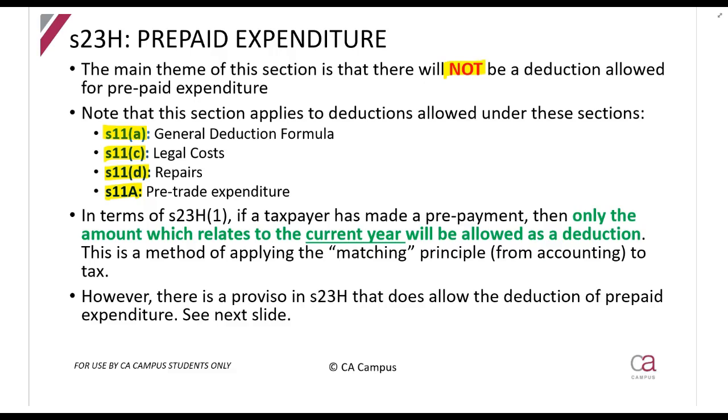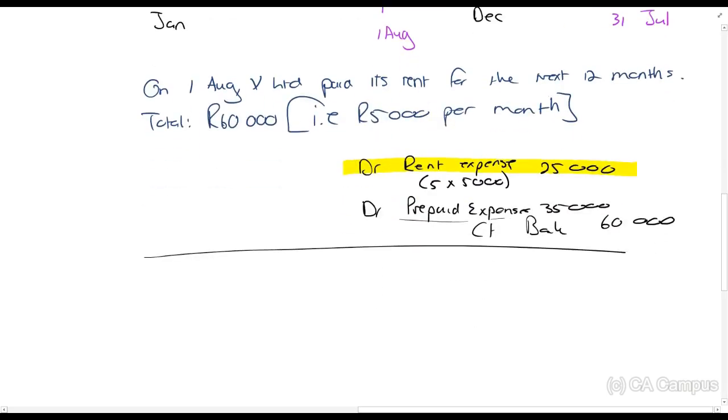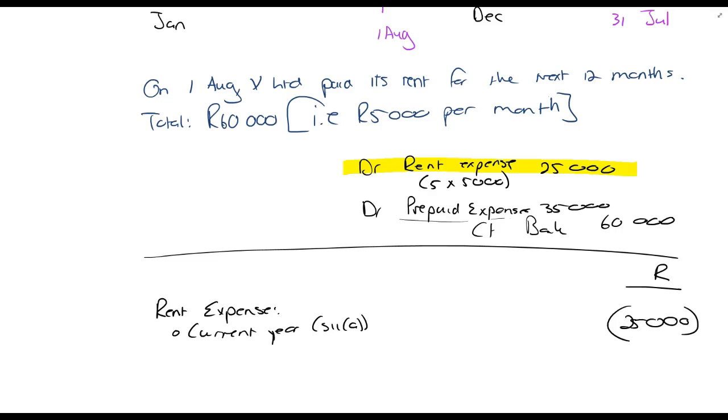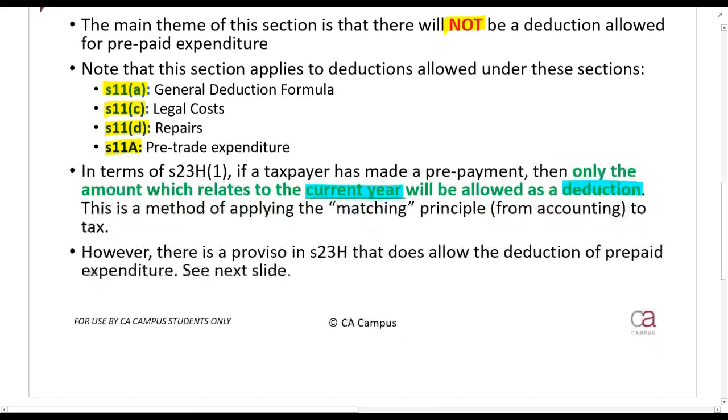Section 23H tells us that only the amount that relates to the current year will be allowed as a deduction. If we were doing a tax calculation, we'd say rent expense current year, Section 11A general deduction formula, 25,000 rands, and that would be allowed as a deduction. The 35,000 prepaid would not be allowed thus far. But then Section 23H gives us some provisos that will allow the deduction of prepaid expenditure.